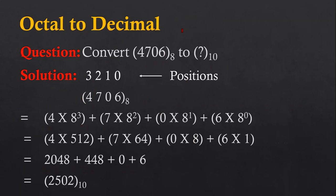After learning conversion from binary to decimal, now I am going to discuss the conversion of an octal number to a decimal number. The value we have to convert is 4706 with base 8 (octal), and we have to convert it into decimal, so the base will be 10.